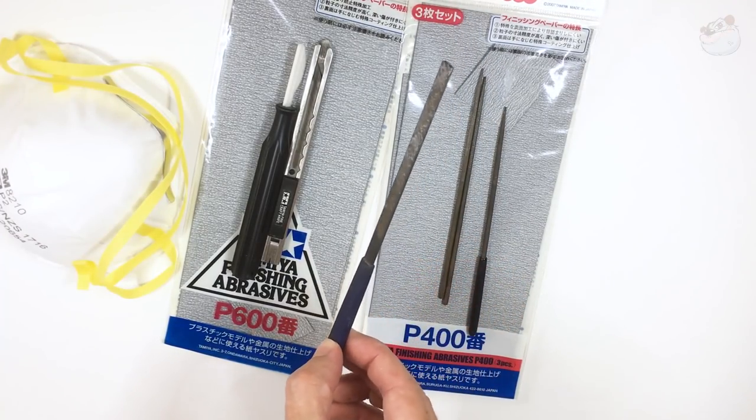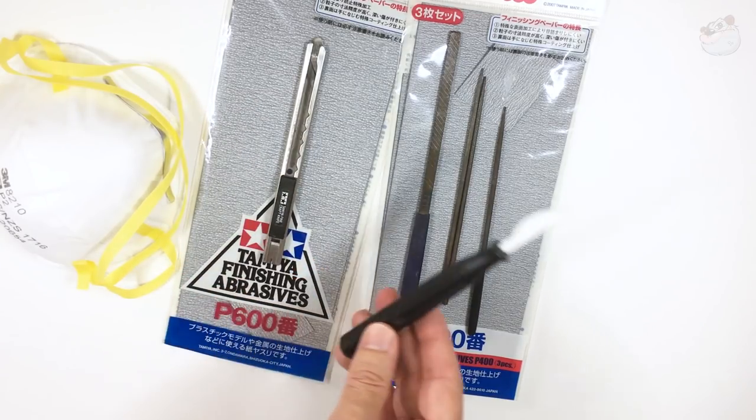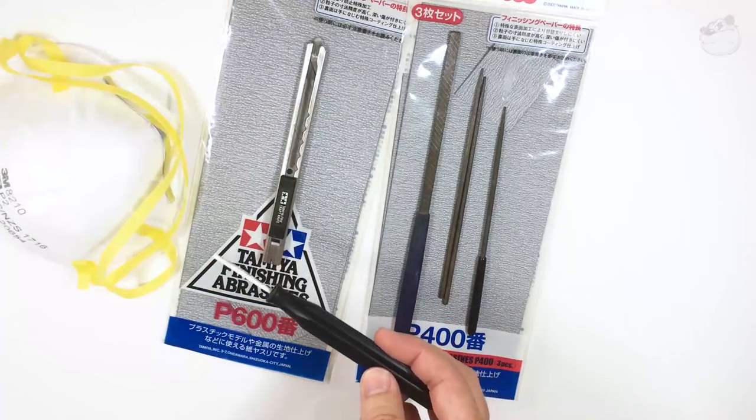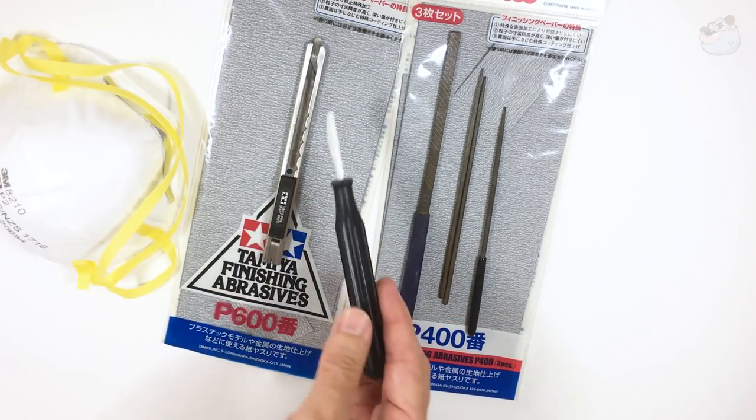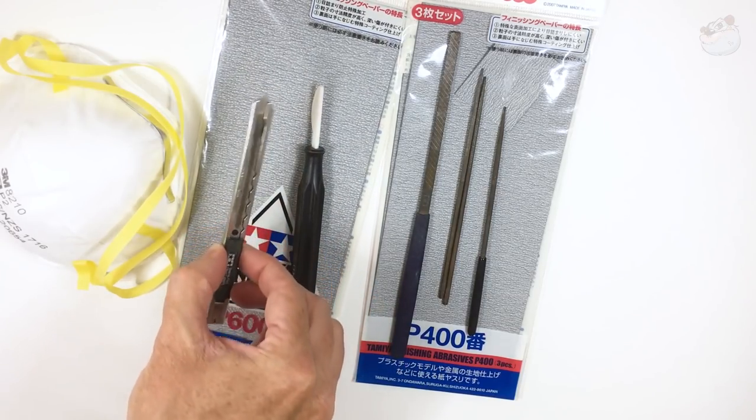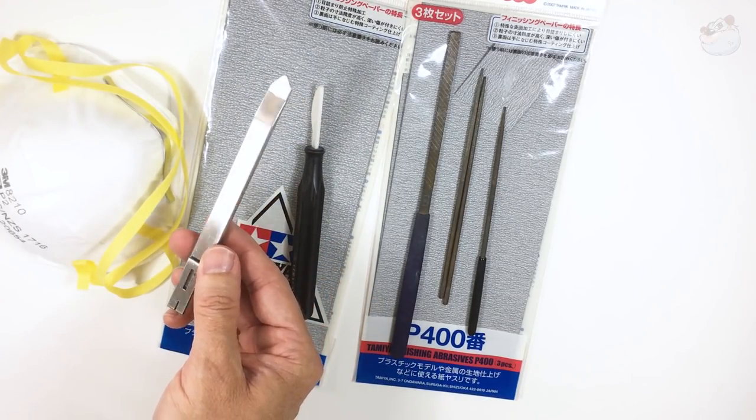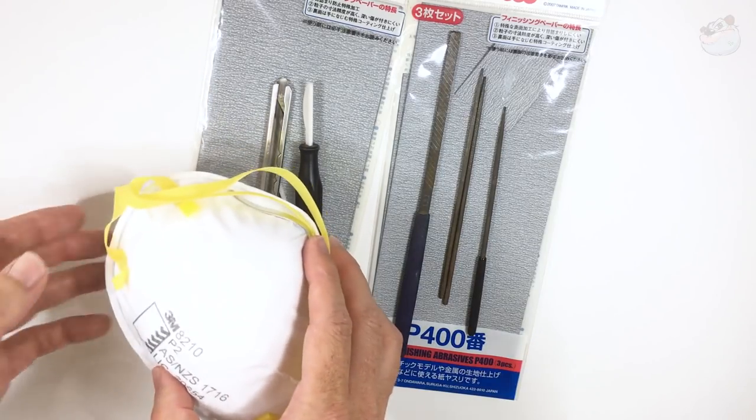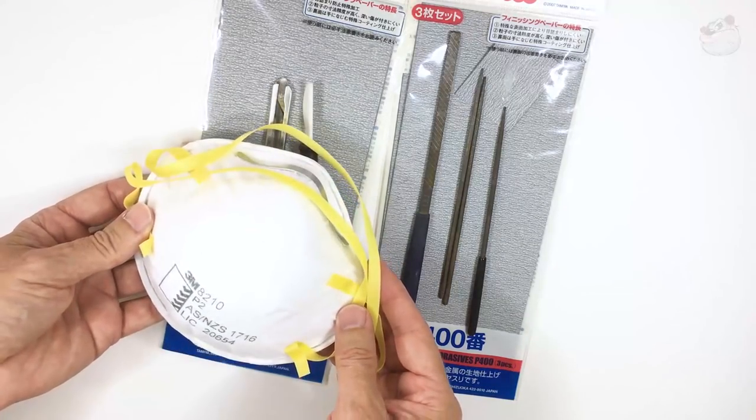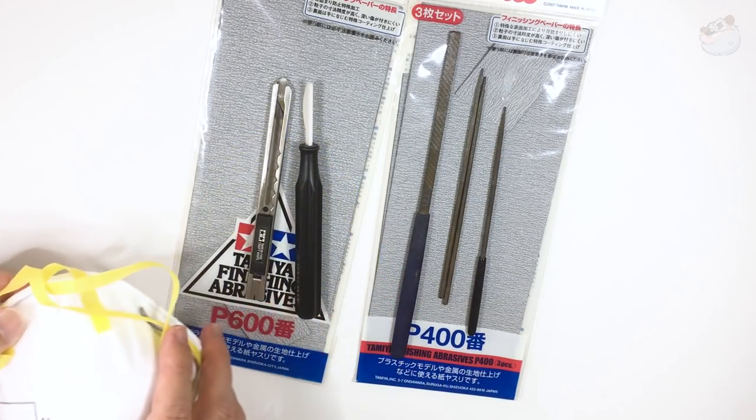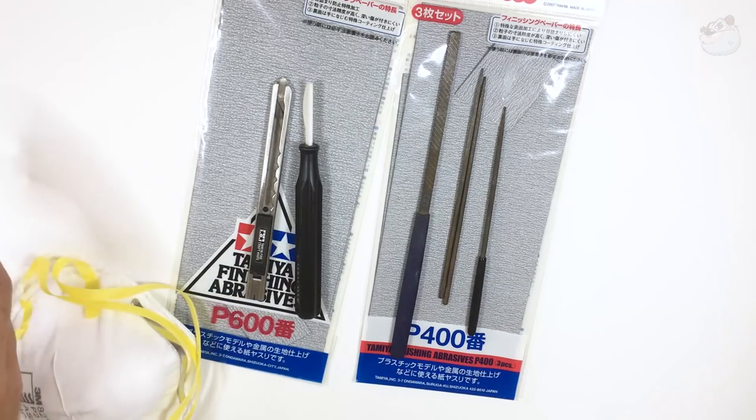With my basic tools here you can see I've got a selection of files, finishing papers as they're called in Japan, sandpaper, 400 and 600 grit. That's a ceramic knife I showed as well as a standard X-Acto type blade and then a dust mask because when sanding back a lot of this plastic it's really important to protect our lungs.